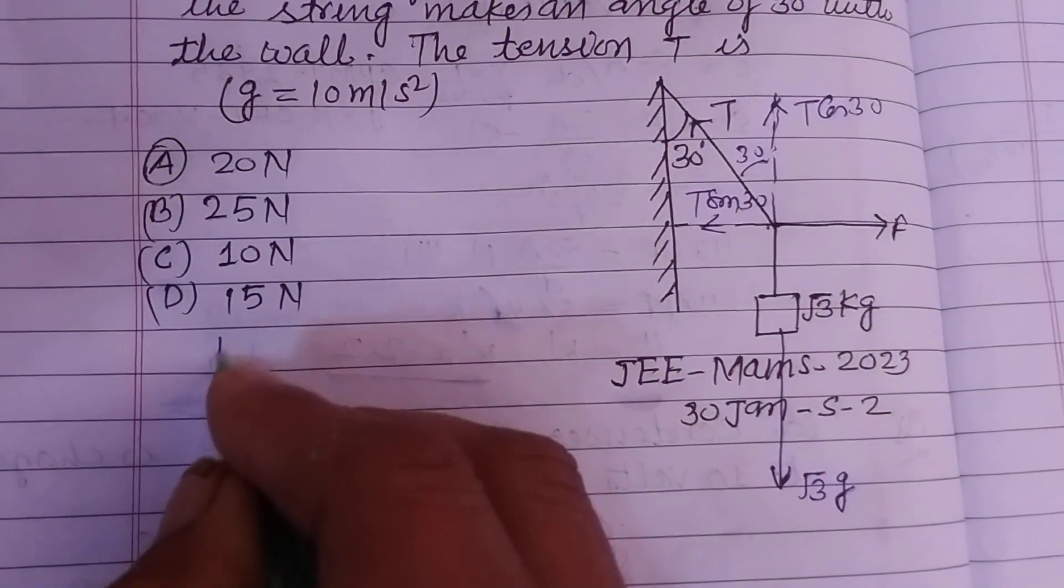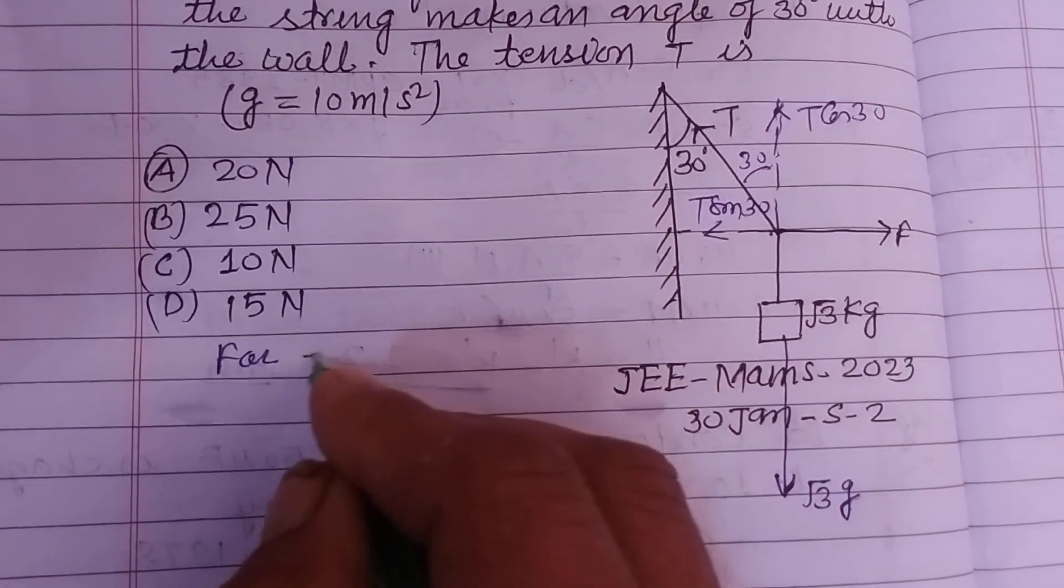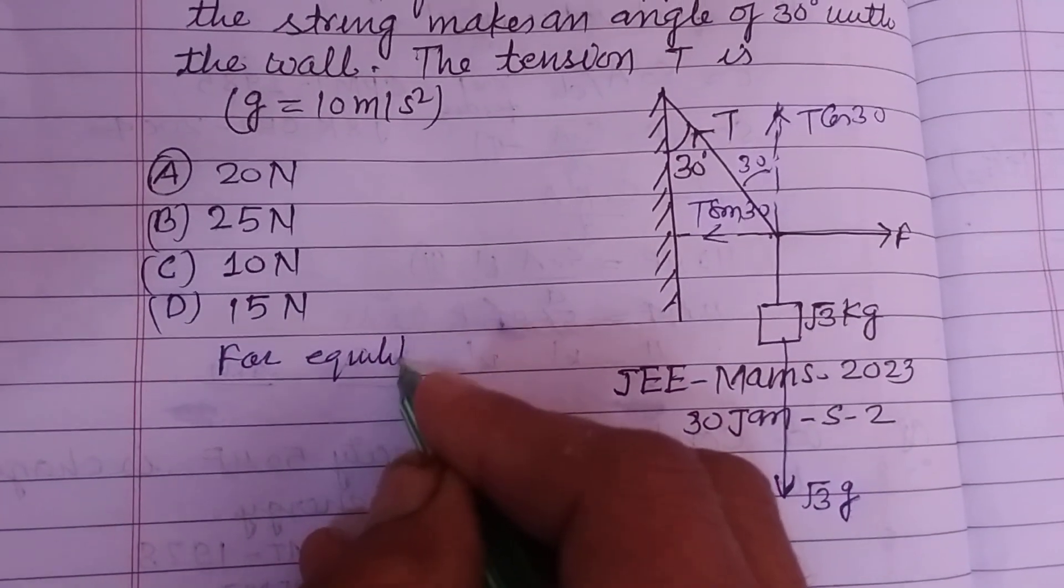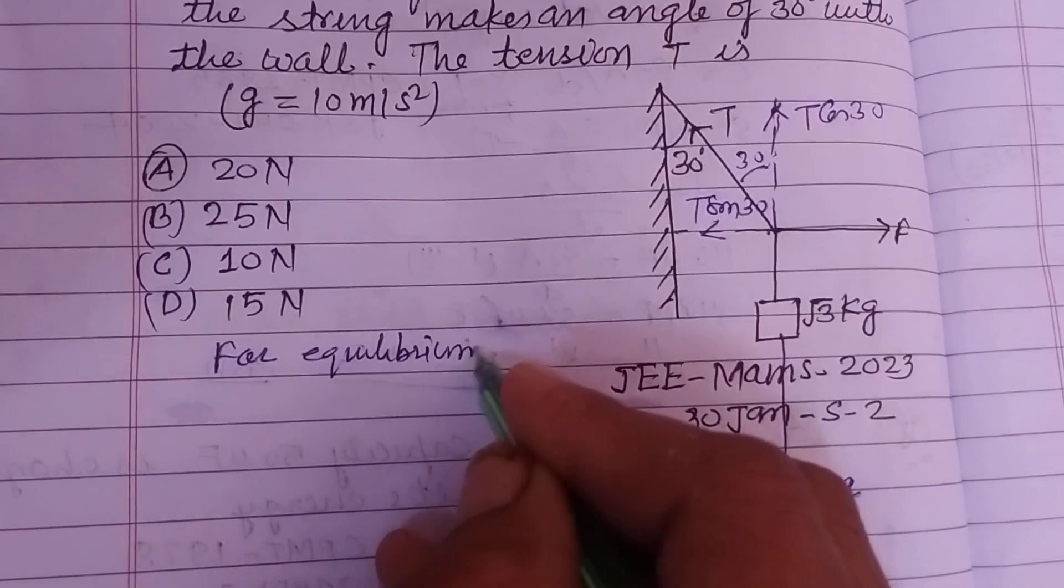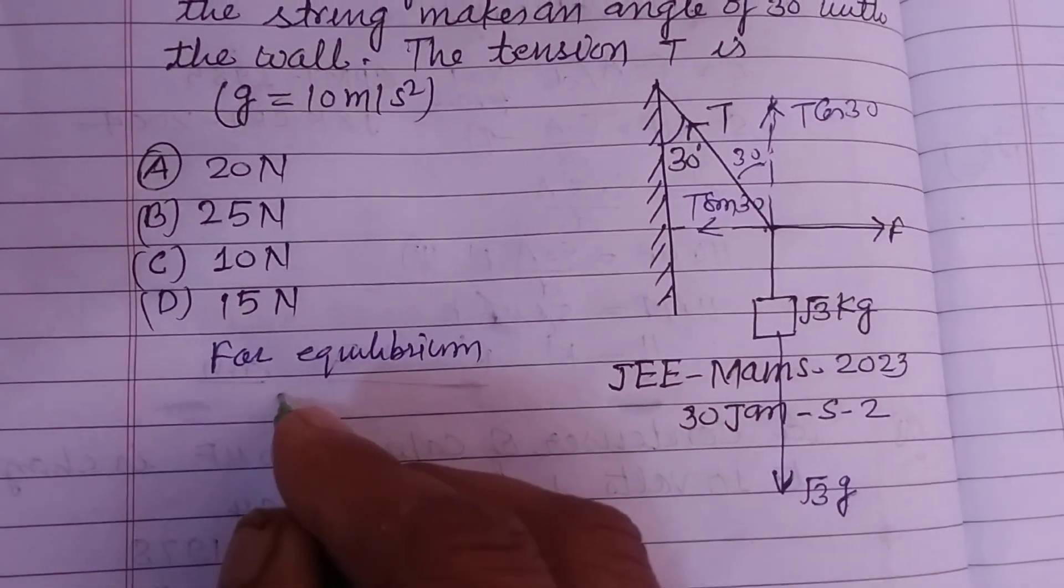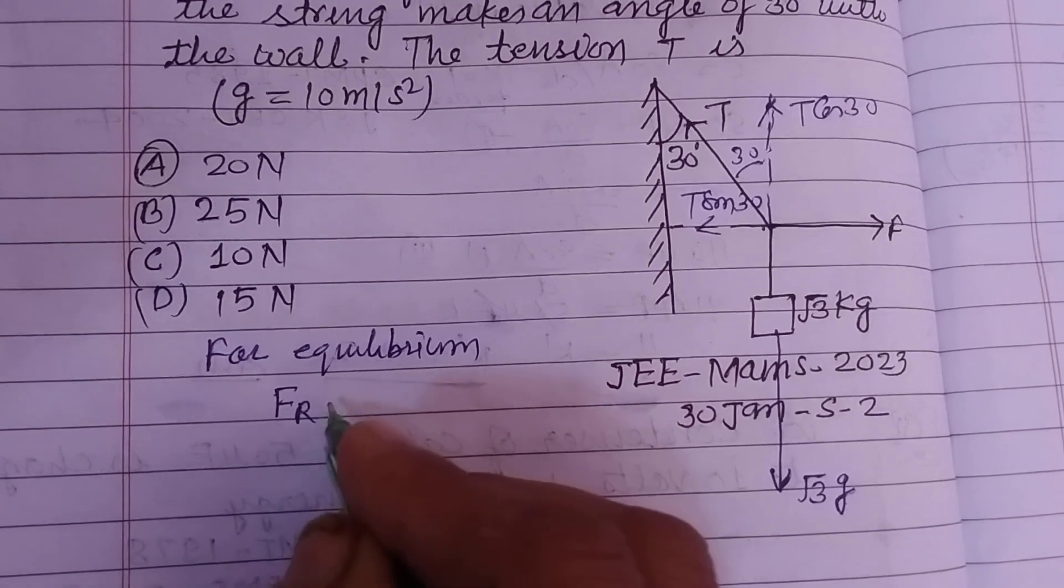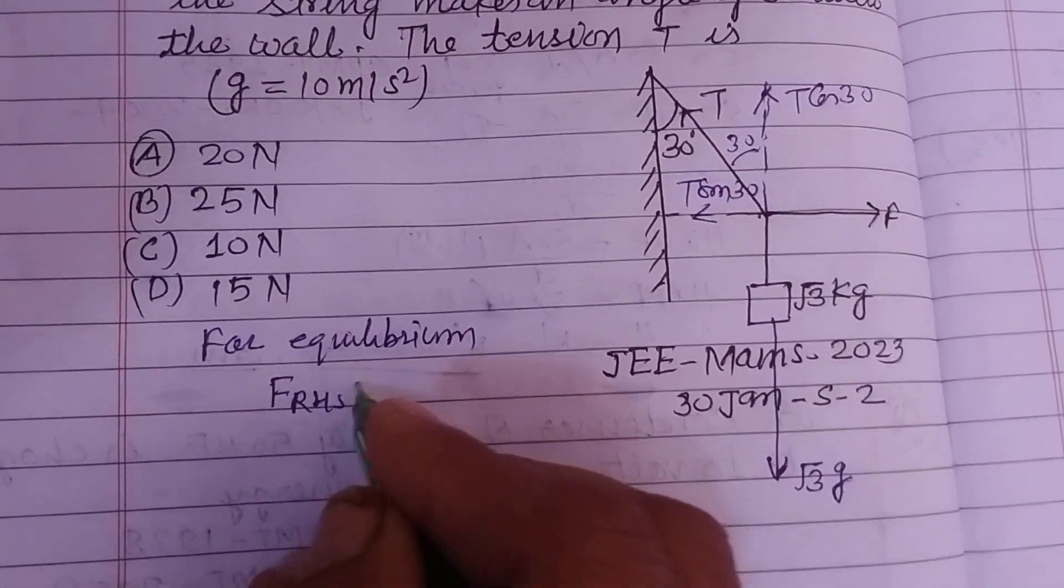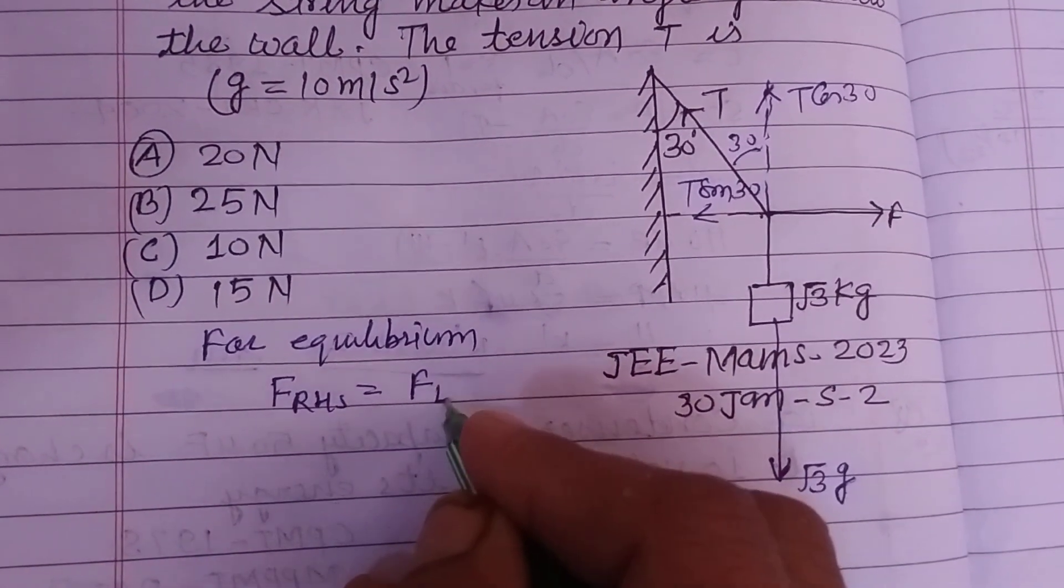Now for equilibrium, the right side force is equal to left side force. Force of right side RHS is equal to force of left side LHS.